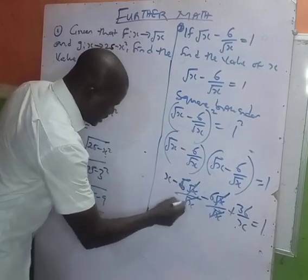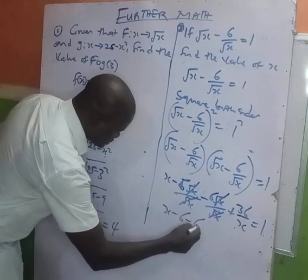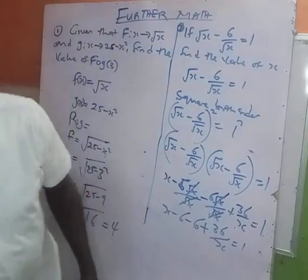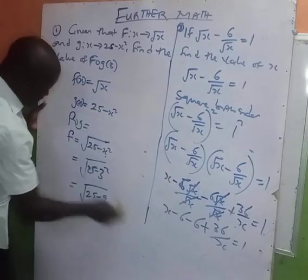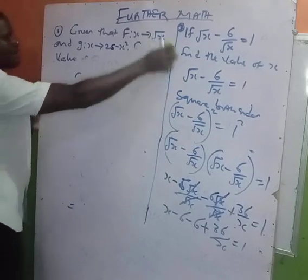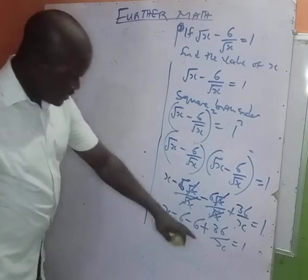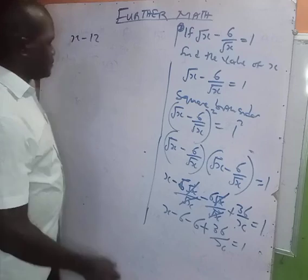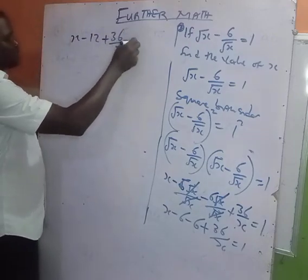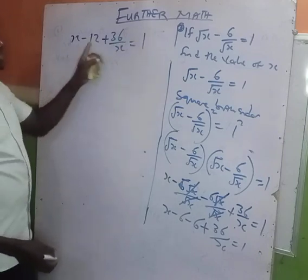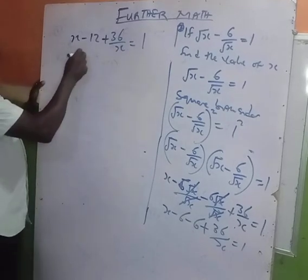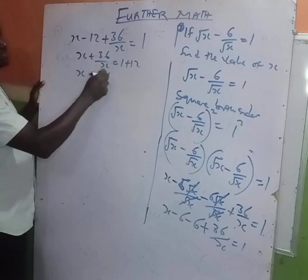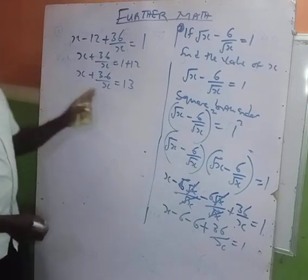Since √x × √x = x, the middle terms cancel and you have x - 6 - 6 + 36 over x = 1, which simplifies to x - 12 + 36/x = 1. Taking -12 to the other side gives x + 36/x = 13.